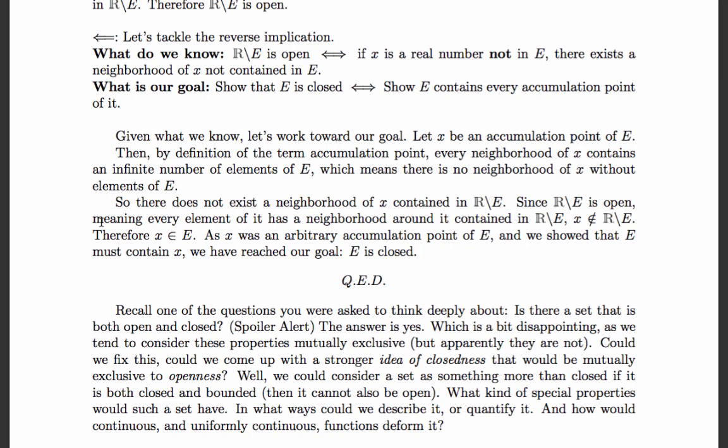Recall one of the questions you were asked to think deeply about: is there a set that is both open and closed? The answer is yes. That's a little bit disappointing, since we tend to consider these properties as mutually exclusive — but that's not true. Could we come up with a stronger idea of closedness that would be mutually exclusive to openness? We could consider a set as something more than closed if it's both closed and bounded. If it's closed and bounded, then it can't be open.